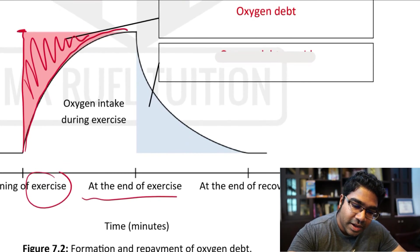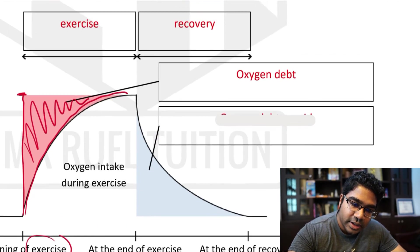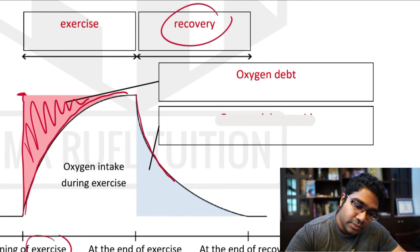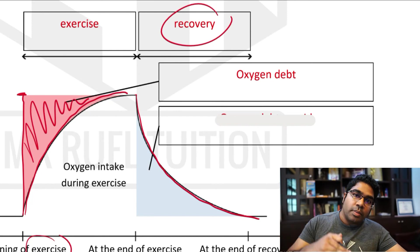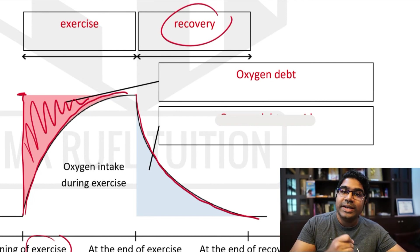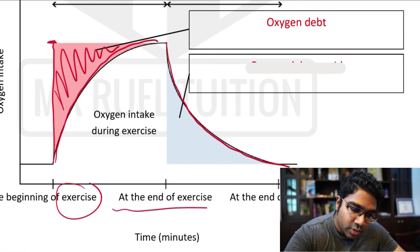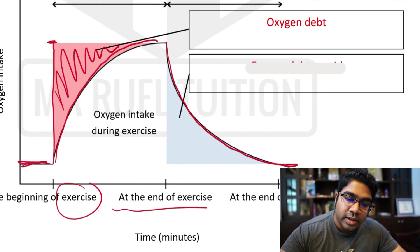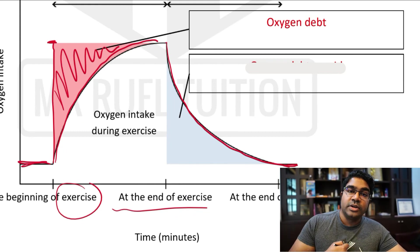And so when we look at this graph, you will see that after exercise, in the recovery period, the oxygen intake slowly goes down. It doesn't drop immediately. It slowly, gradually declines. This is the normal rate, by the way, as you and I are breathing right now. That's the normal rate.